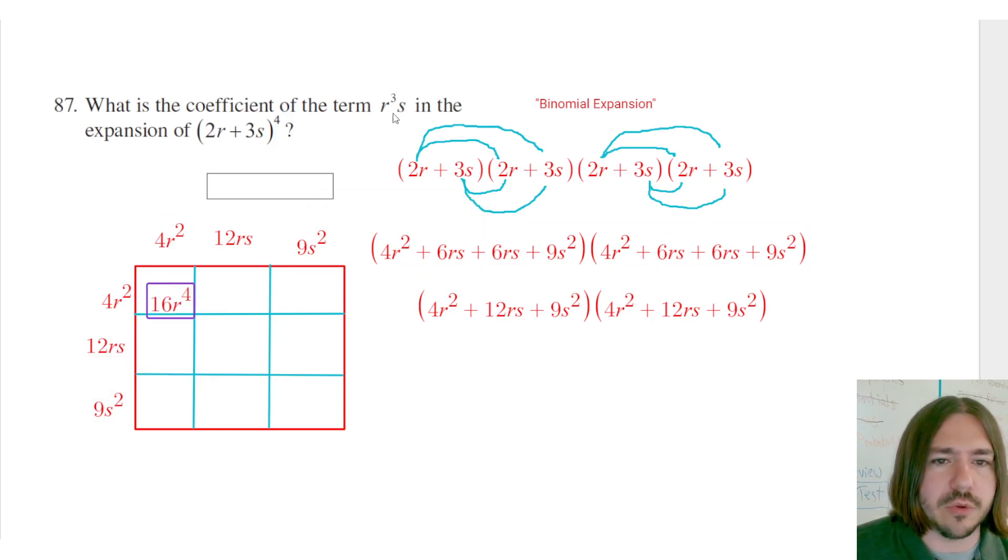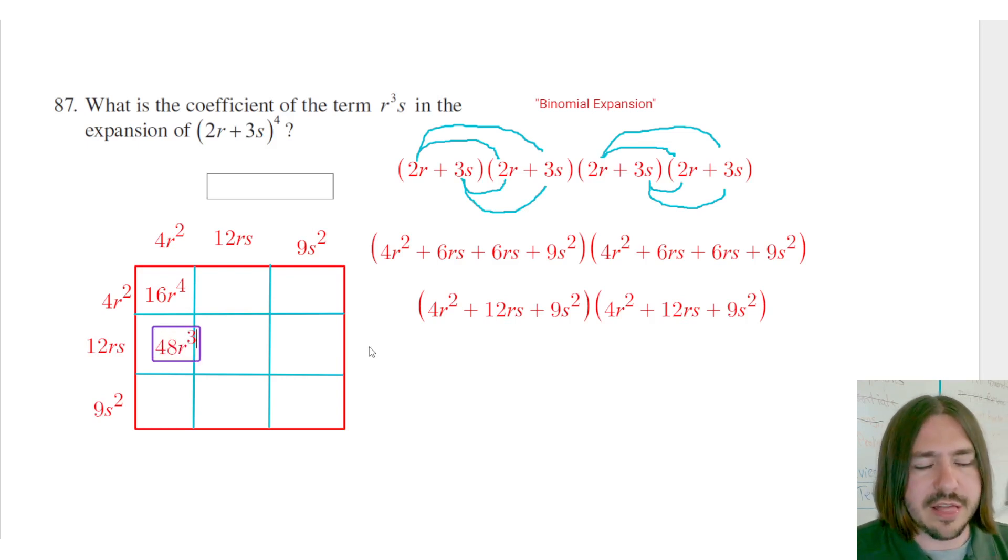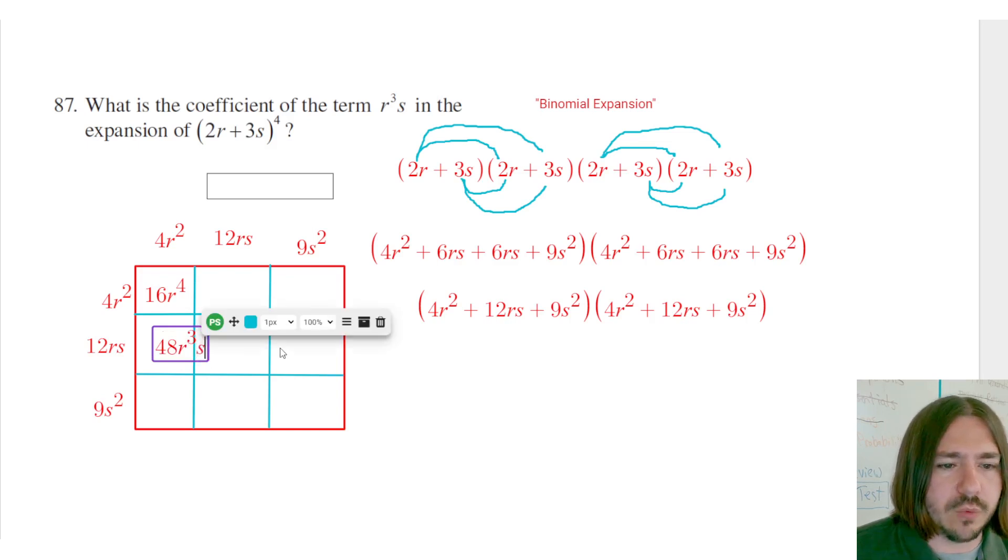So I'm not really interested in that because we're only interested in the coefficient to r cubed s. So once we see that, we'll kind of see what our final answer is going to be here. 4r squared times 12rs is going to be 48r cubed s. That's the one we want to focus on.